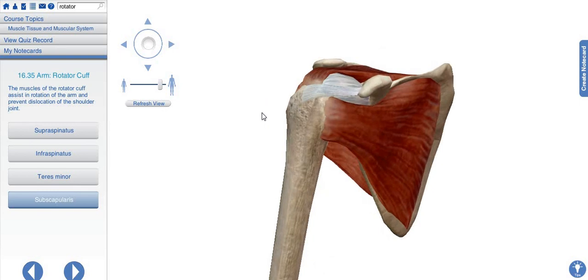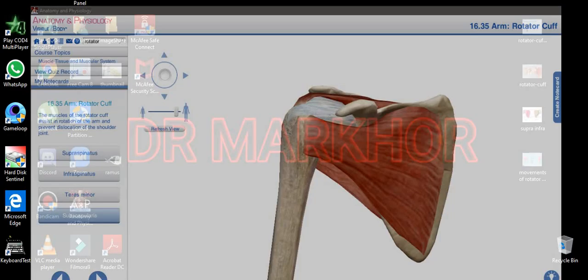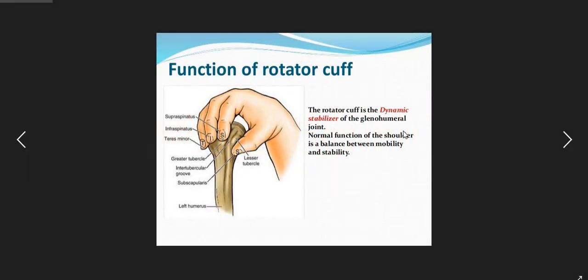Now we will see a picture for a clearer concept. Here we have a picture showing SITS as the mnemonic. This is the subscapularis muscle on the lesser tubercle. The greater tubercle gives three surfaces for attachment: one for the supraspinatus muscle, the second for the infraspinatus muscle, and the third for the teres minor muscle.